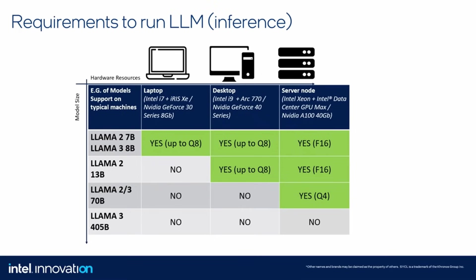Quantization is a process where the precision of the numbers used to represent model parameters and activations is reduced by using a different numerical representation. Typically, running a model like LLaMA 2 with 7 billion parameters would only be possible on a large multi-GPU server. But by reducing precision from FP32 to FP16, we can fit that model on a server node with a discrete GPU. Using the custom quantization types available in LLM.cpp, we can reduce the model size further so it fits on a normal laptop or discrete GPU, and even fit larger models like LLaMA 2 with 13 billion parameters. Reducing precision normally means reducing accuracy, which could lead to hallucinations, but with these custom quantization types the accuracy loss does not result in significant degradation of model outputs.